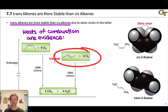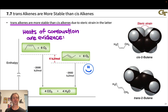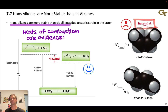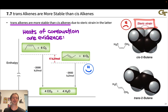The heats of combustion of these compounds provide evidence: combustion of trans-2-butene is less exothermic than that of cis-2-butene, indicating the trans isomer starts at lower energy and is more stable. The reason is steric interactions between the two relatively close groups in the cis isomer, creating steric strain that is absent in the trans isomer. For more complex alkenes, this still applies, and may be even worse with larger groups.